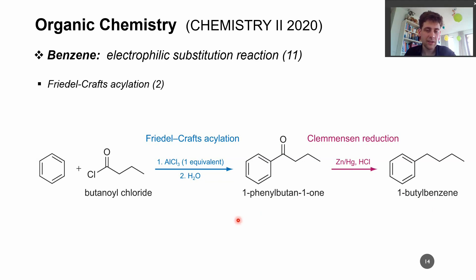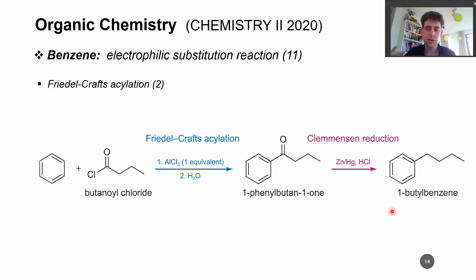This is exactly what you would like to do if you want to selectively go to the monoalkylated product. You want to go via the Friedel-Crafts acylation and the Clemmensen reduction to the monoalkylated product, and not go directly from benzene via the Friedel-Crafts alkylation, because this is not selective — you end up with all of these polysubstituted benzene molecules.